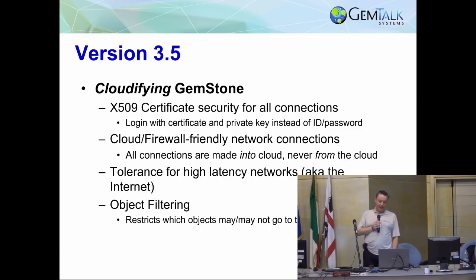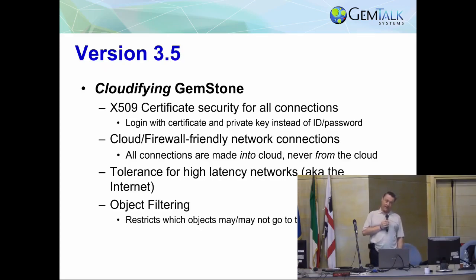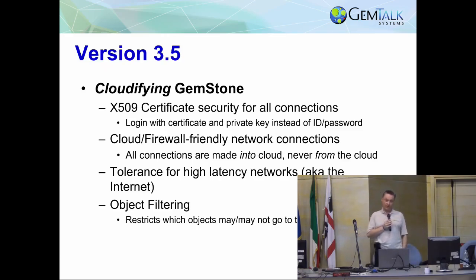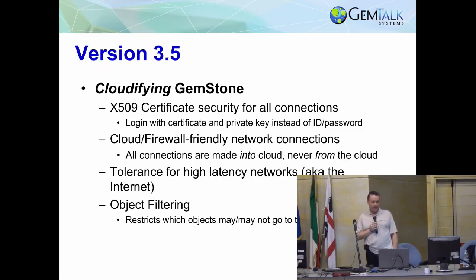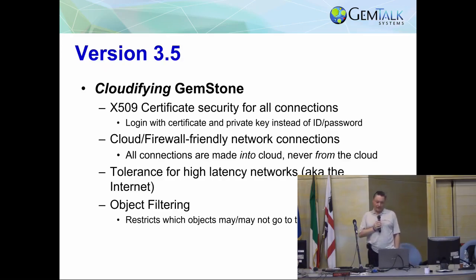Cloud-friendly firewall network connections. Since we're talking about going from the customer's data center out to the cloud to support additional computing, all connections must be initiated into the cloud and from the cloud. A customer doesn't want connections showing up off the open internet going through their firewall into something, even if it's all GemStone protocol. We've had to do quite a bit of re-engineering to make that work, but we've got that done. There are also many things in GemStone that don't assume a high-latency network between the various distributed parts — with some compute out in the cloud and some in-house, it's going over the internet through who knows how many hops.